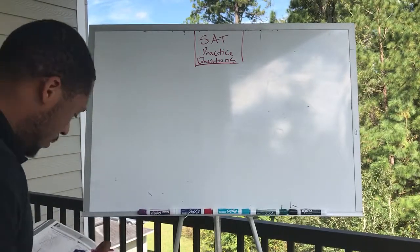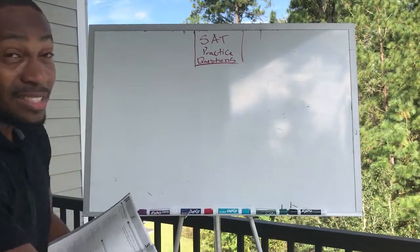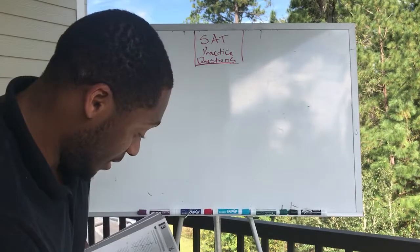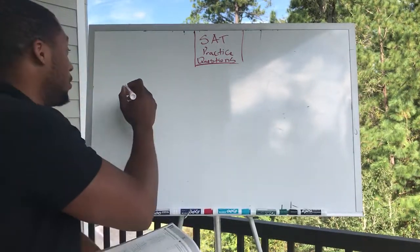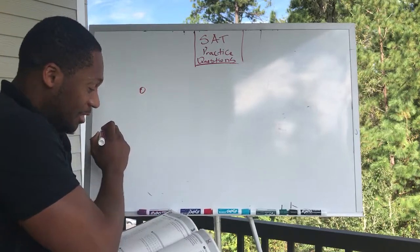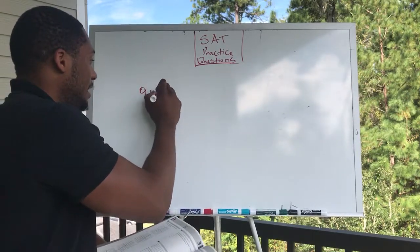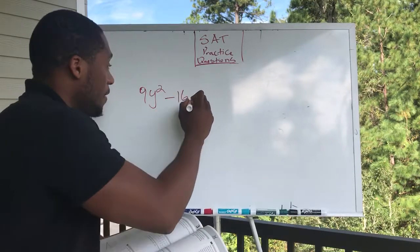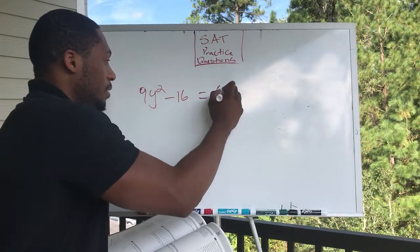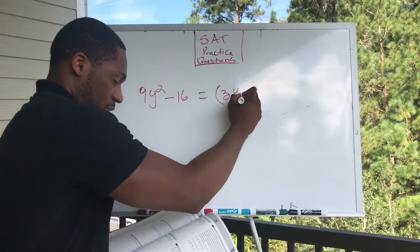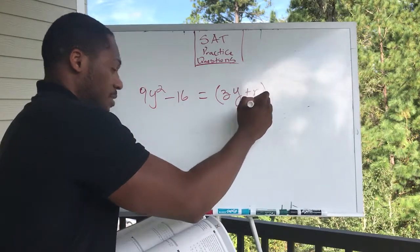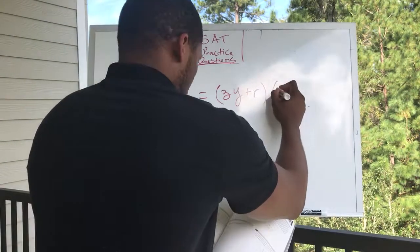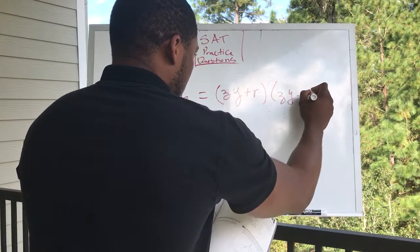Let's stay on this page. And it is still hot and windy here. We're at the end of October 2018. That's crazy. Nine Y squared minus 16 is equal to ZY plus R, ZY minus R.